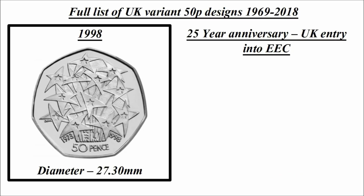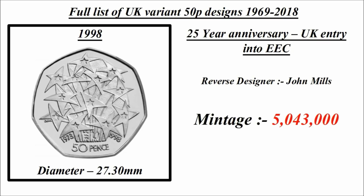1998: the diameter has now changed to 27.30 millimetres, so from this point on we're looking at coins that can still be found in circulation today. This coin marks the 25-year anniversary of the UK's entry into the EEC. The reverse designer is John Mills and the mintage figure is 5,043,000.